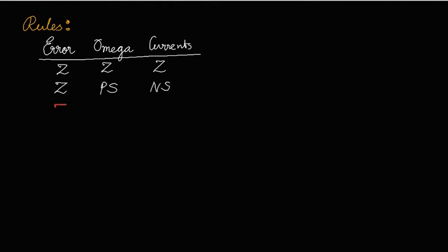Another rule given by the engineer: if error is zero and omega is negative medium, then current is positive small. As observed, when omega is positive small, current is negative small; and when omega is on the negative side with medium magnitude, current is on the positive side — positive small. When it is positive, the current is negative, and when it is negative, the current is positive, though the magnitudes are not always symmetric based on experience.